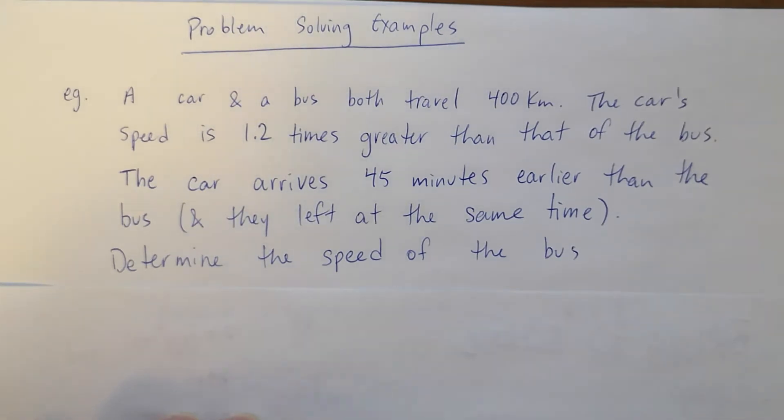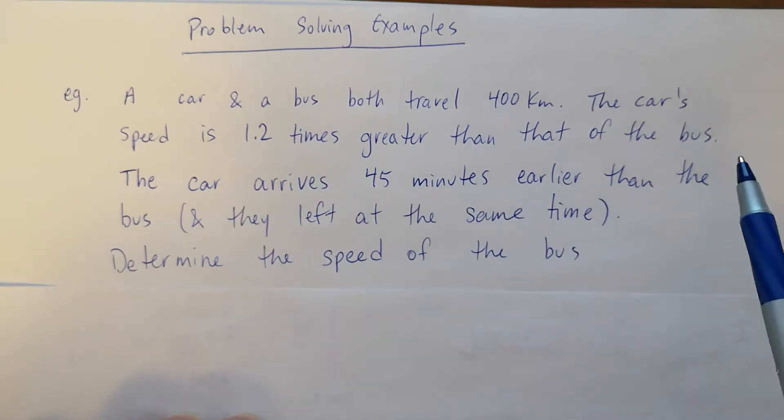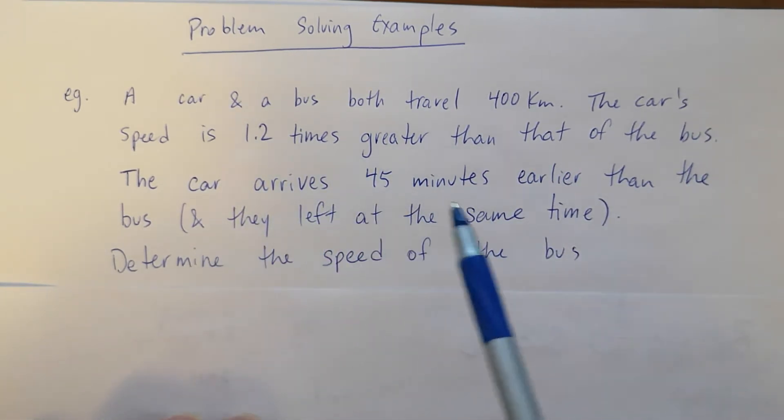Let's look at this example. It's very similar to one we did yesterday but it'll be a little more difficult. A car and a bus both travel 400 kilometers. The car's speed is 1.2 times greater than that of the bus. The car arrives 45 minutes earlier but they left at the same time. Determine the speed of the bus.